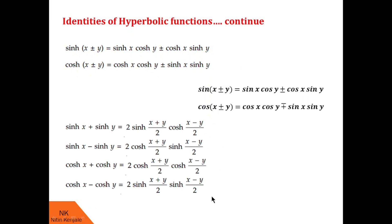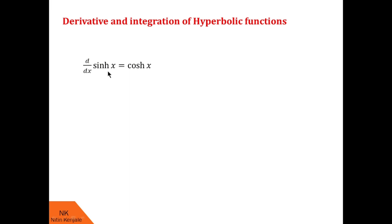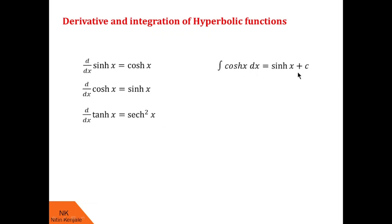These are some of the identities of hyperbolic functions. I am not proving all of them, but I have given you the idea to prove these identities. Now let us proceed with derivatives and integrations of some hyperbolic functions. The derivative of sinh x is cosh x, and the derivative of cosh x is sinh x — unlike in circular functions where the derivative of cos x is minus sin x. The derivative of tanh x is sech²x. For integrals: the integral of cosh x dx is sinh x plus c, the integral of sinh x dx is cosh x plus c, and the integral of sech²x dx is tanh x plus c.